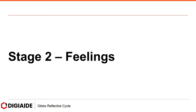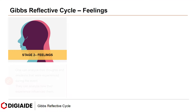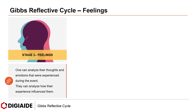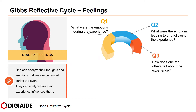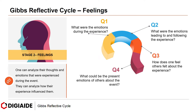Stage 2 is Feelings. One can analyze their thoughts and emotions that were experienced during the event, and how their experience influenced them. The questions in this stage: first, what were the emotions during the experience? Second, what were the emotions leading to and following the experience? Third, how does one feel others felt about the experience? Fourth, what could be the present emotions of others about the event? And finally, what were the thoughts during the event?